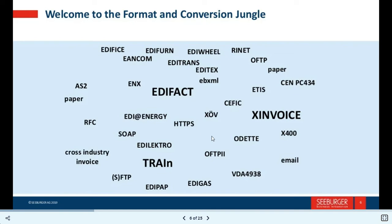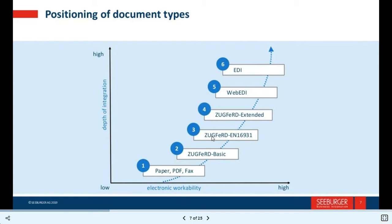As you can see on the screen, the left-hand side shows depth of integration from low to high, and the right-hand side shows electronic format capability from low to high. Paper and fax is the first step, then basic, then EN 16931, then extended, then EDI. Finally, the goal is full area process integration from paper.